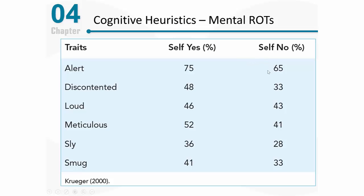The false consensus effect says that if I believe these traits describe me — if I think that I'm alert — I'm more likely to think other people are alert. However, if I believe that I'm not necessarily alert, I will think fewer other people are alert. And that's why you keep seeing these differences in the data. If I am a discontented person, I will think other people are discontented people, at least more so than people who say that doesn't describe them.